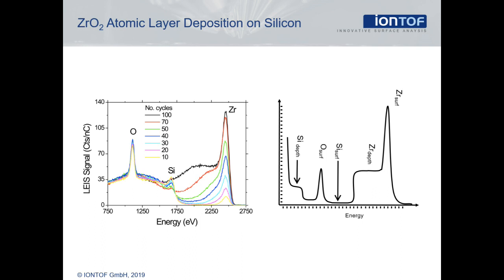But even after 70 cycles, less than 100% of the surface is covered by the zirconium oxide. Only after 100 cycles is the silicon peak completely gone. With the increasing number of deposition cycles, we also see a tail to the left of the zirconium peak develop. This indicates that prior to the formation of a closed film, part of the material is growing in multilayers. Looking at the blue spectrum for 40 cycles, we see about 50% surface coverage from the intensity of the surface peak. At the same time, we see a tail which extends more than 200 eV to lower energies, corresponding to more than 1.5 nm of thickness. This means that while about 50% of the surface is still not covered, parts of the covered area are up to 1.5 nm thick.